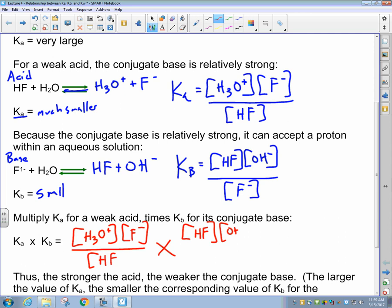We cancel some stuff out here. The F negatives are going to cancel each other out. The HFs are going to cancel each other out. And what we get as a result is H3O positive times OH negative as a result of that combination.